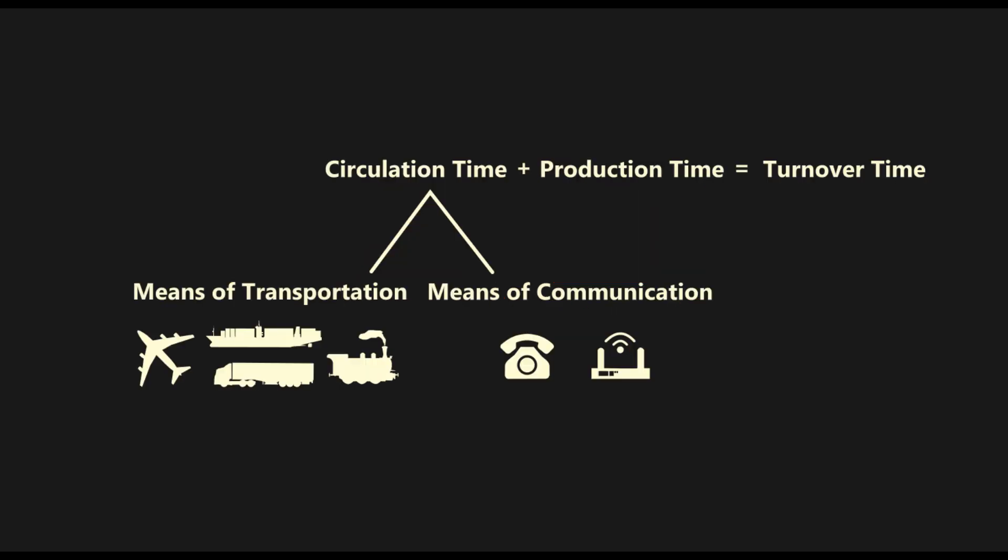Circulation time affects turnover as it is one of the two components that determine turnover time, the other being the production time. Marx interestingly notes that a major element affecting circulation time is the development of the means of transport and communication. The means of transport in particular influences the volume of commodity capital moving through space at any given time. As such, developments in the means of transport affect circulation time.